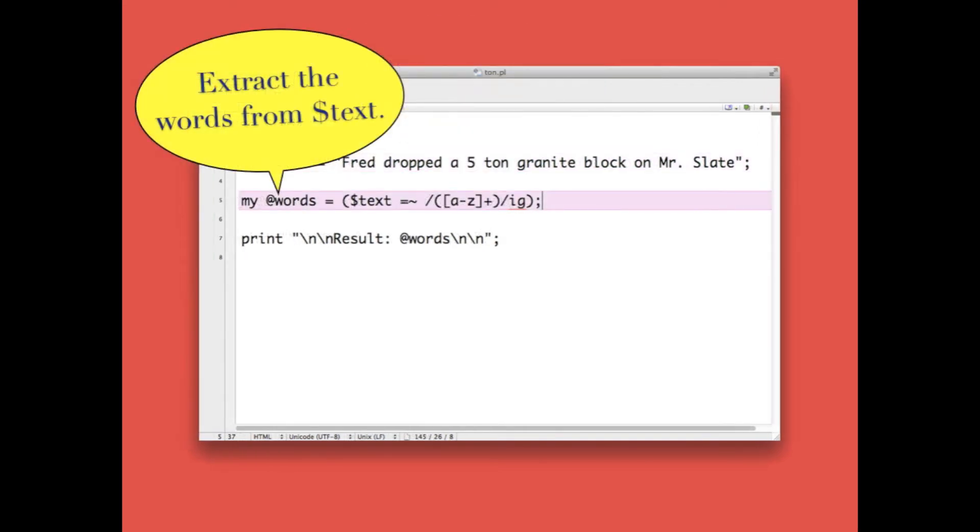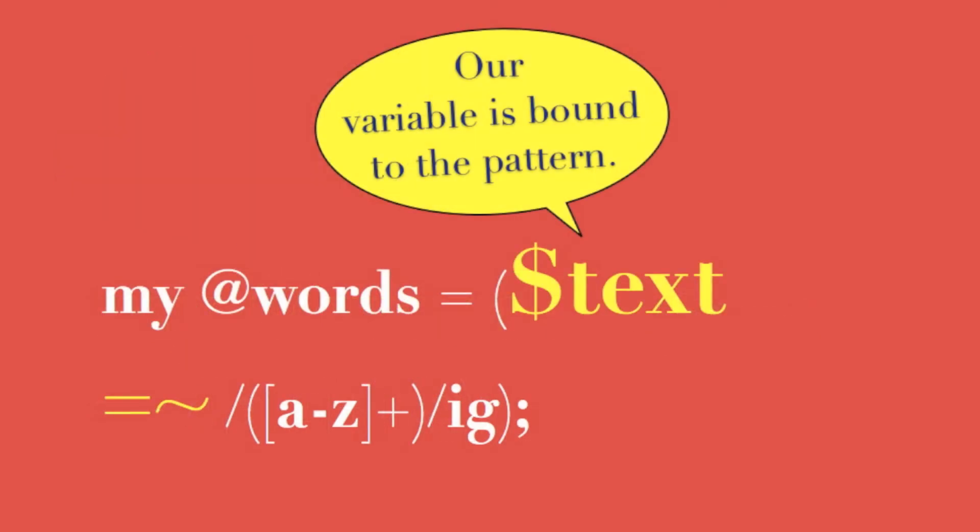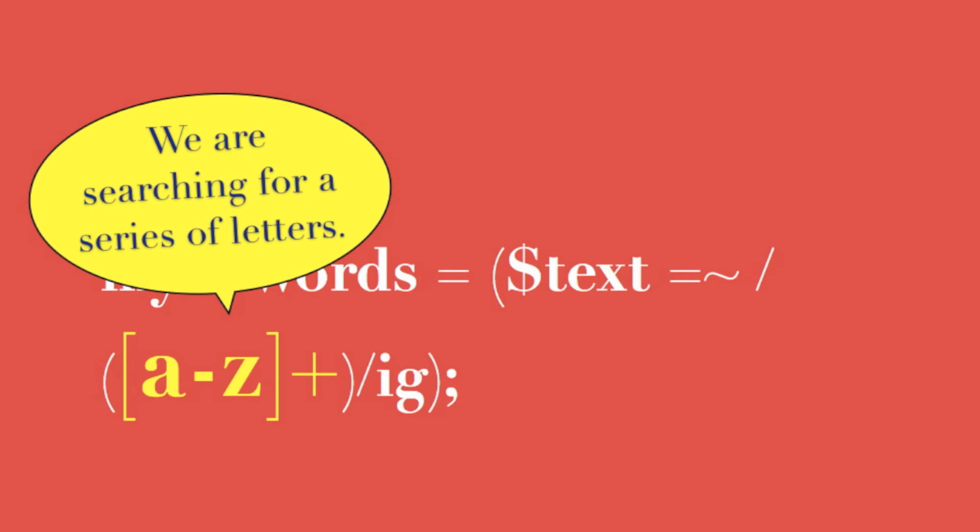The purpose of this code is to extract the words from the variable $text. It begins by defining the array @words. The variable $text is bound to our search pattern.